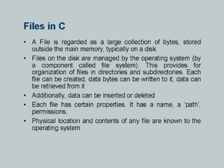Each file has properties: a name, a path, permissions for reading and writing, and its physical location and contents are known to the operating system. When I write a program to read or write data from or to a file, I use the operating system as an intermediary. Any input/output operation necessarily goes through intrinsic calls to the operating system's features.